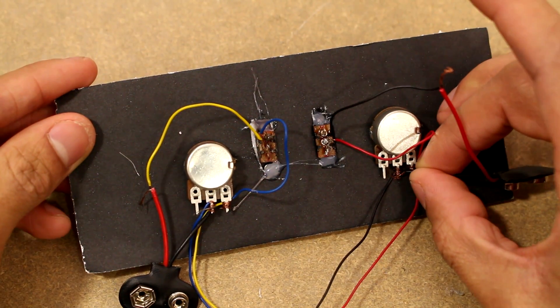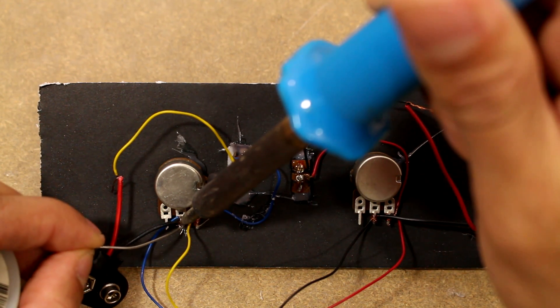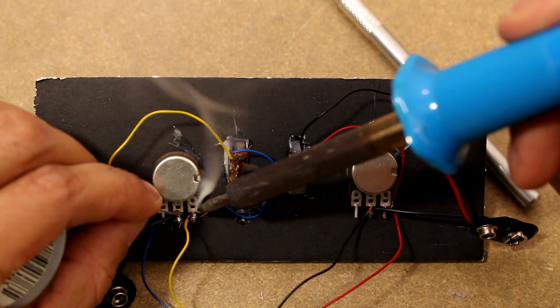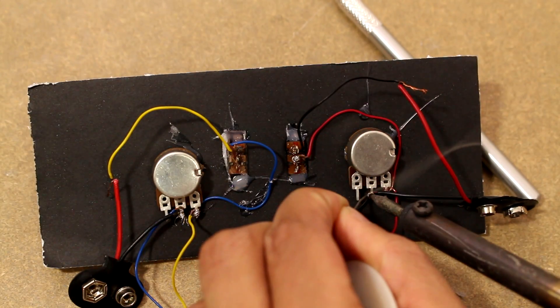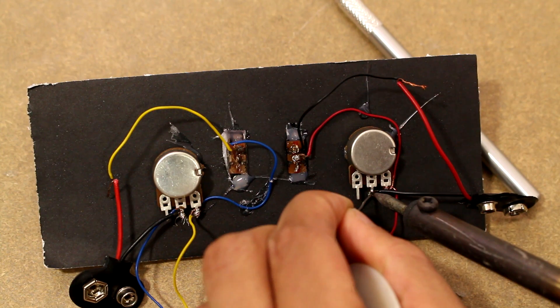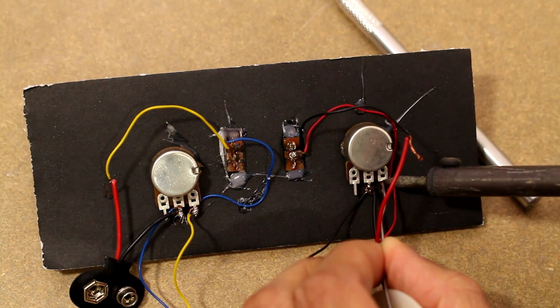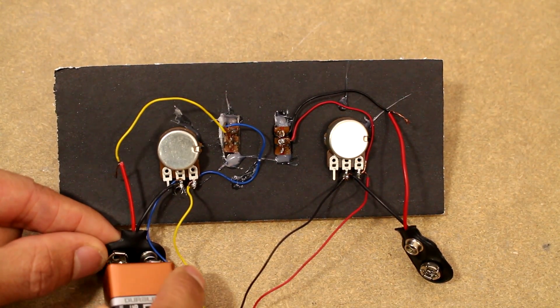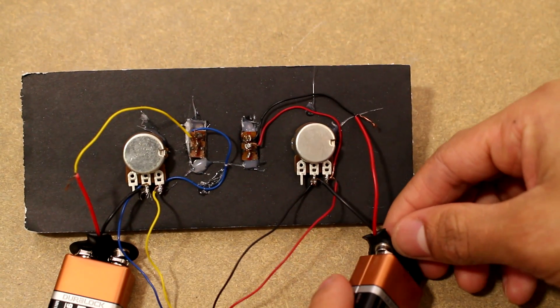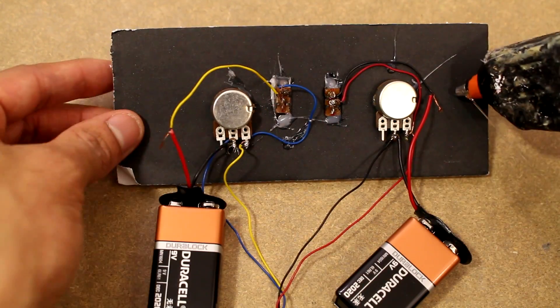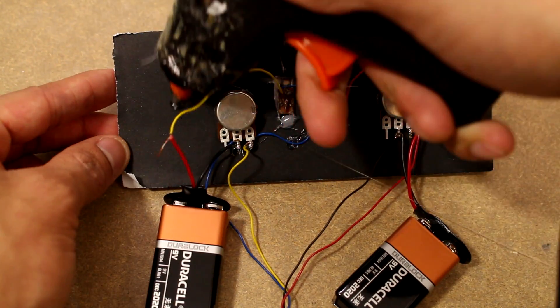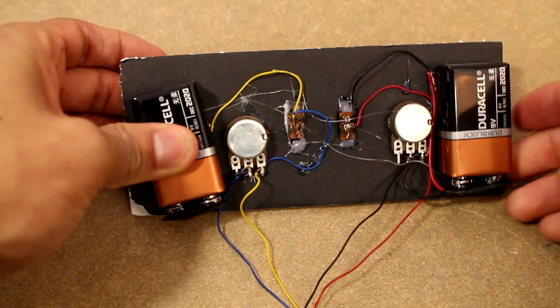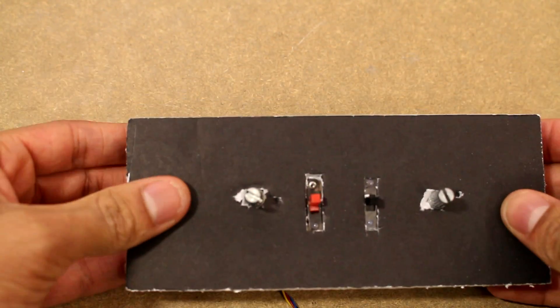After soldering these connections to make them permanent, we can now attach the batteries to our remote. Once the batteries are attached, we'll just glue them to the bottom side of our remote, and then we can go ahead and test.